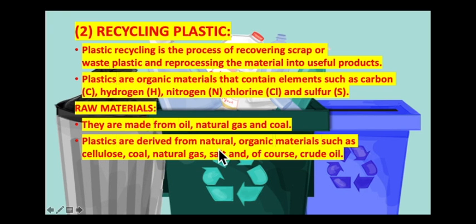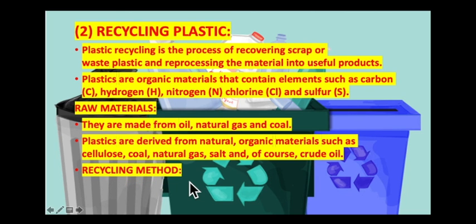Plastics are derived from natural organic materials such as cellulose, coal, natural gas, salt, and crude oil. If we can reuse plastic objects such as bottles over and over again, that will reduce the amount of fossil fuels we need to make them. If we cannot reuse things, then we can still recycle them. Let's discuss the recycling method for plastic.